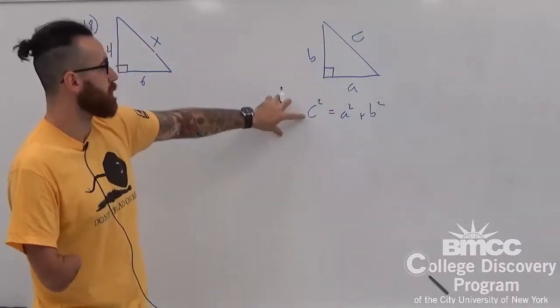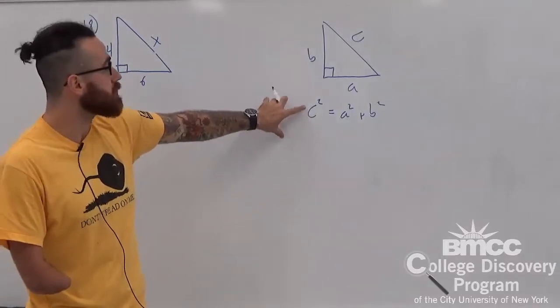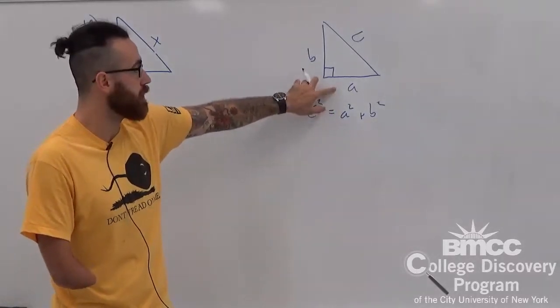To do that, we have Pythagoras theorem, which is c squared is equal to a squared plus b squared.